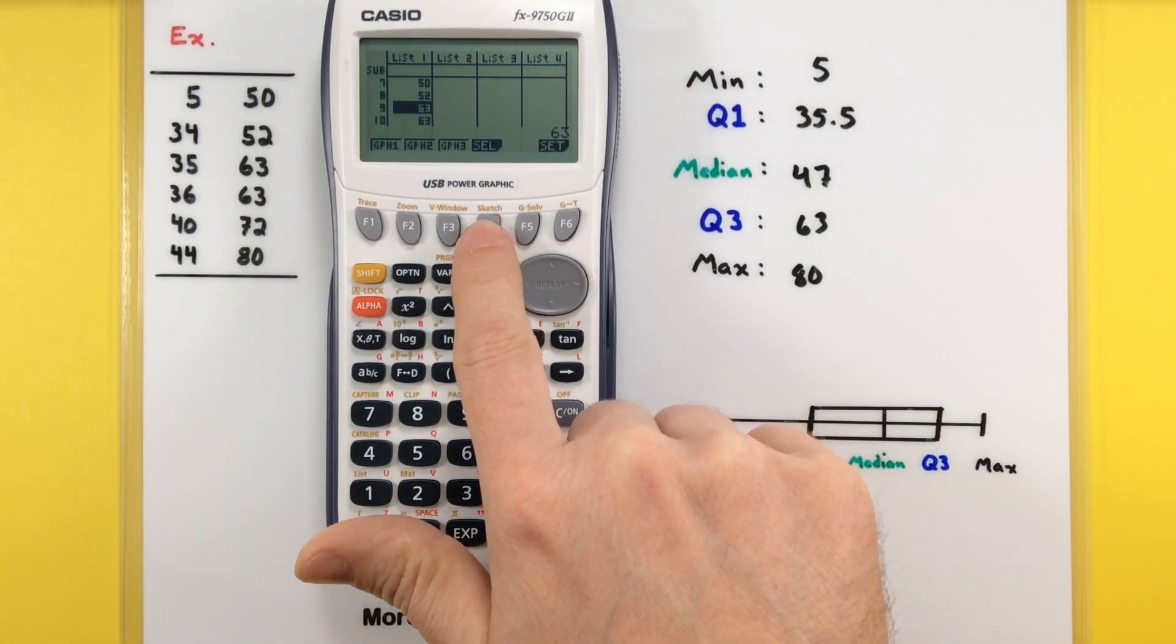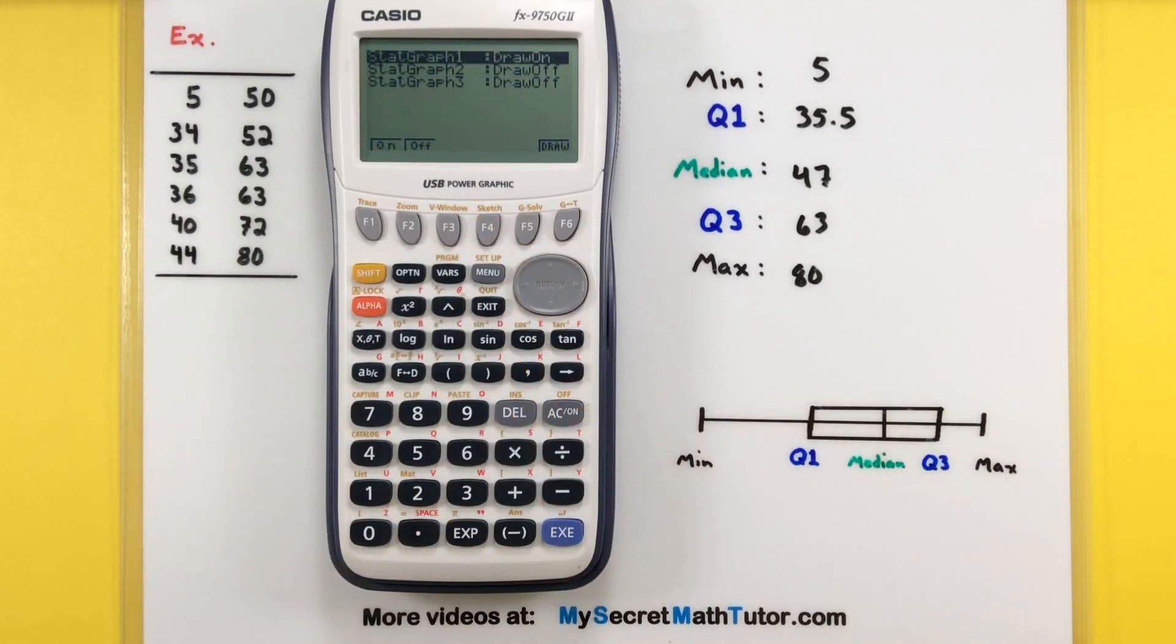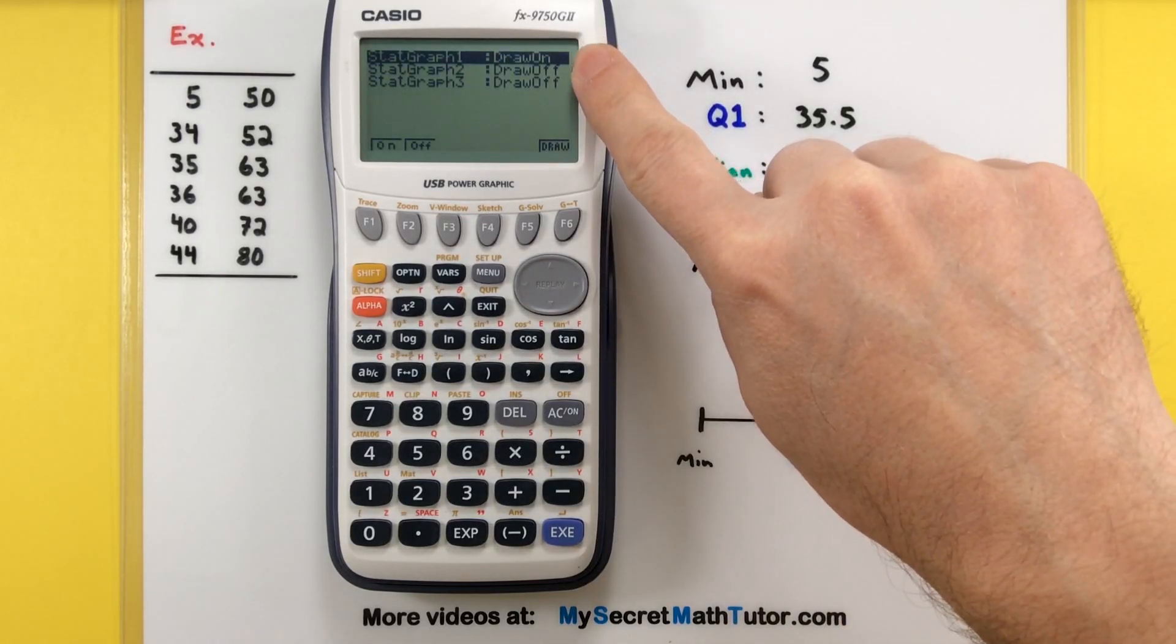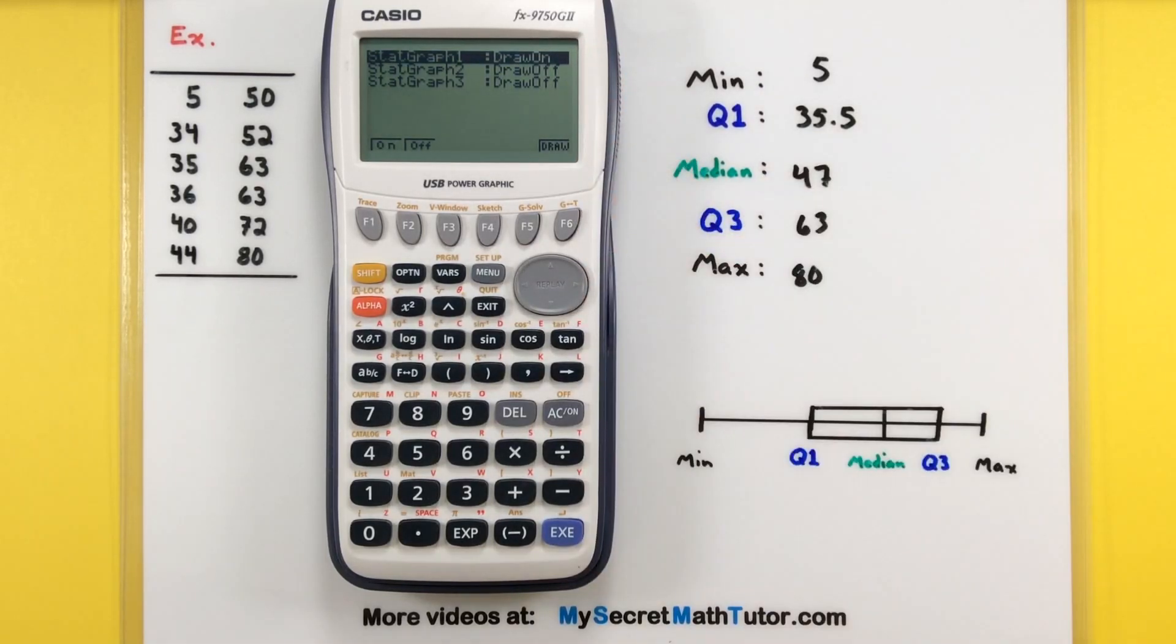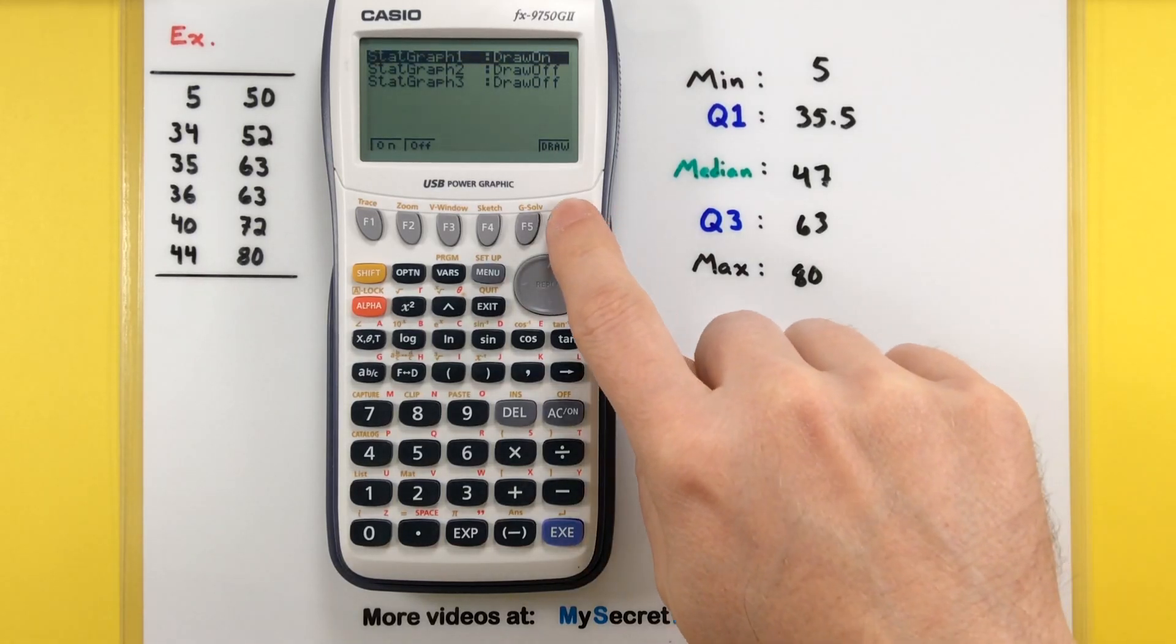Now I can go into the select part. And since data is in the calculator, it usually has these on, but it's always good to check. So my stats graph for number 1 is on, and the graph stats for 2 and 3, those are both off. So here's where you can toggle them, turn them on or off if you want. Alright, so it already has one on. That sounds good. Let's go into draw.